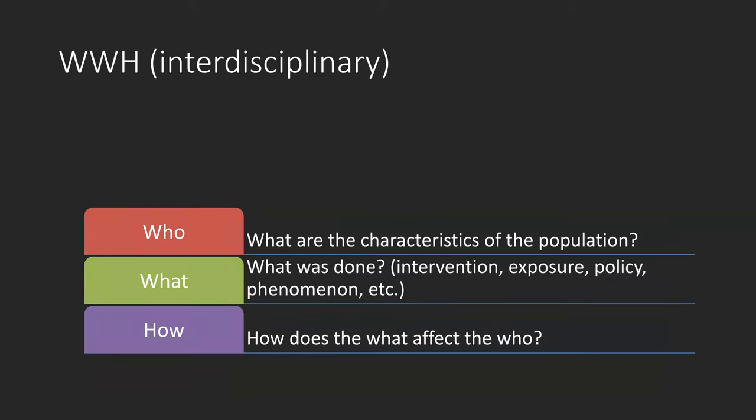This is the last framework: WWH. The WWH framework is good for interdisciplinary studies if the other frameworks do not apply. WWH stands for who — what are the characteristics of the population; what — what was done, like an intervention, exposure, policy, phenomenon, etc.; and how — how does the 'what' affect the 'who'?